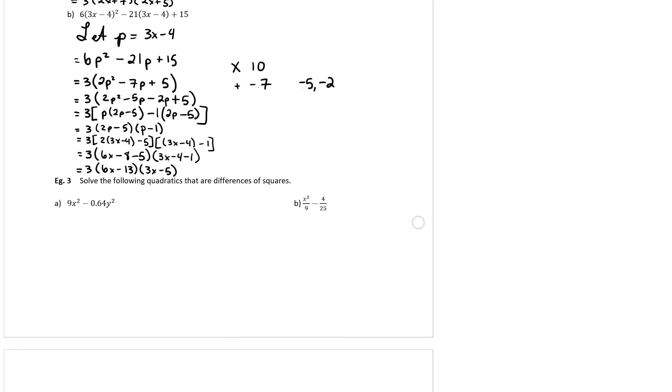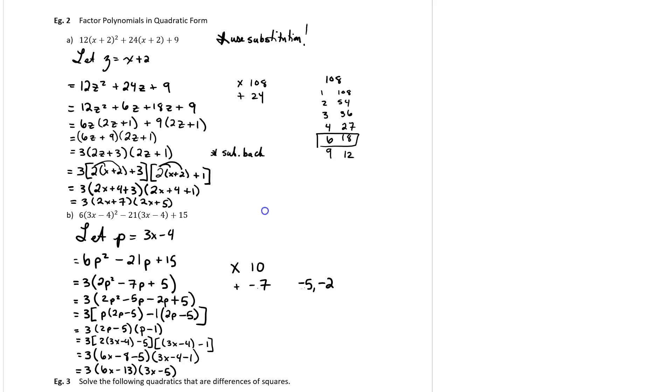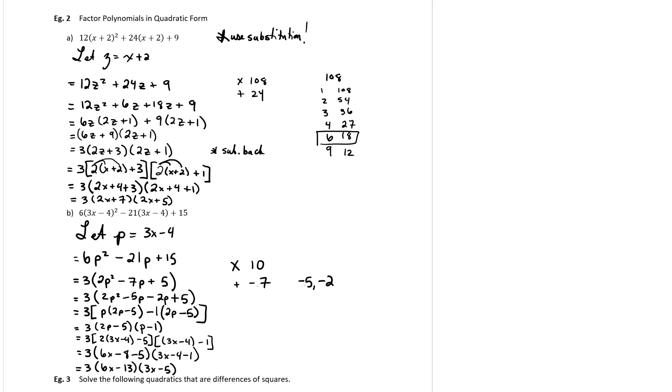So, in summary here, folks, whenever you see expressions that look a little bit too big for their britches, what I mean is they look a little bit too complicated, see if you can use substitution. Because if it's something that's the same in both, and one's a squared and one is not, we can easily substitute it with another letter, factor it, and then substitute it back.